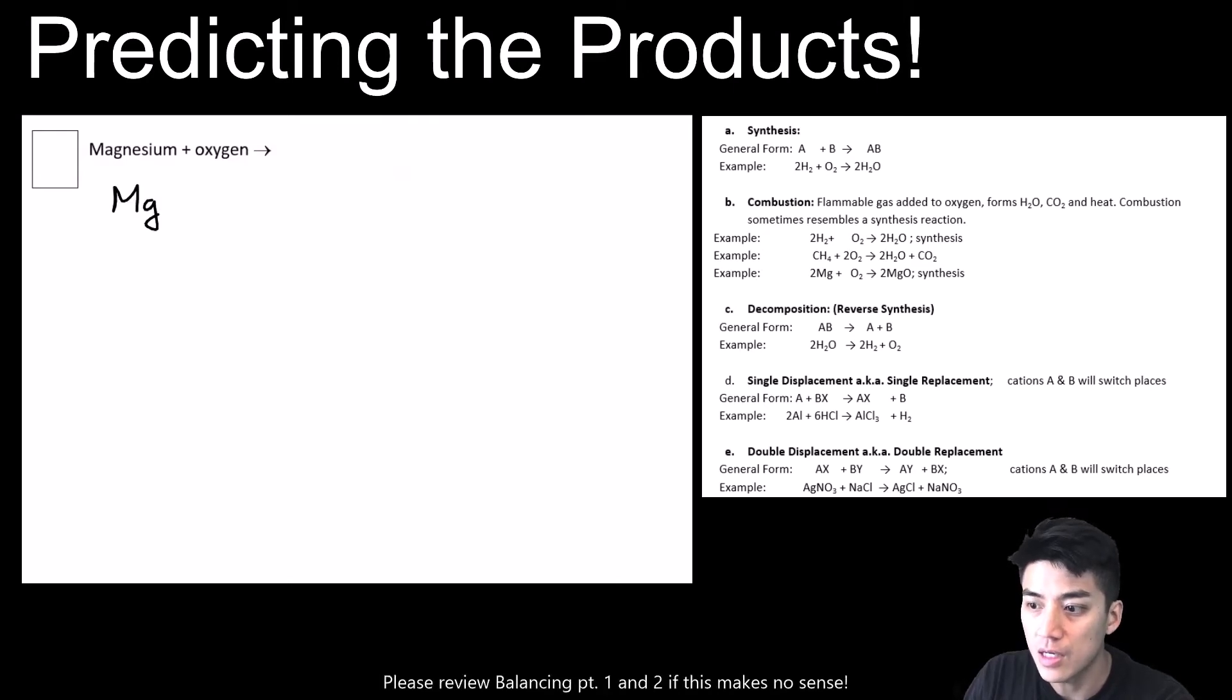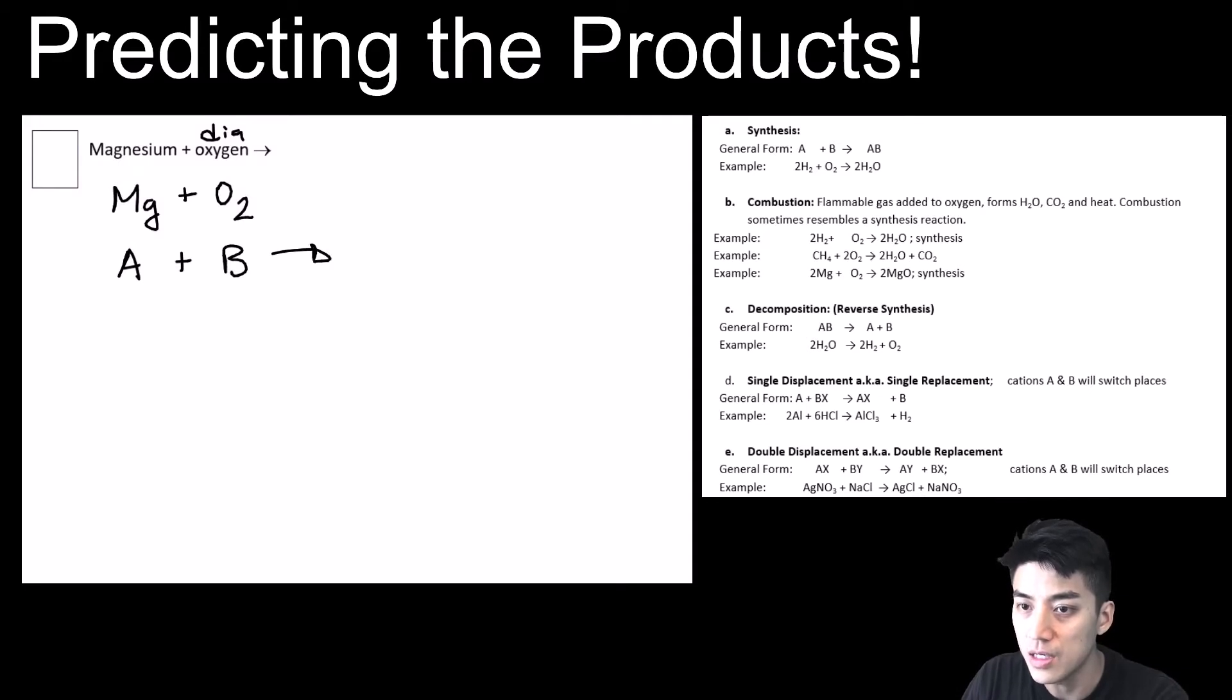We are balancing magnesium plus oxygen, and the products aren't given, so we have to make a prediction. Let's first write out our reactants. So this is Mg plus O2, and I can already see that it's in the form A plus B will give us some compound AB.